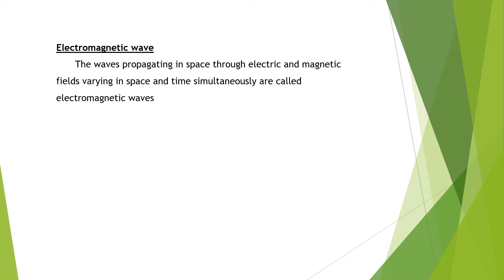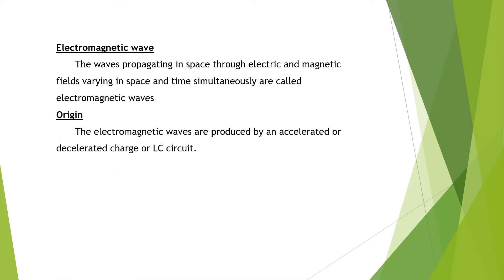The waves propagating in space through electric and magnetic fields varying in space and time simultaneously are called electromagnetic waves. So electromagnetic waves include electric and magnetic waves, both varying with respect to space and time. That is electromagnetic waves. Next is what is the origin — how will they be produced?